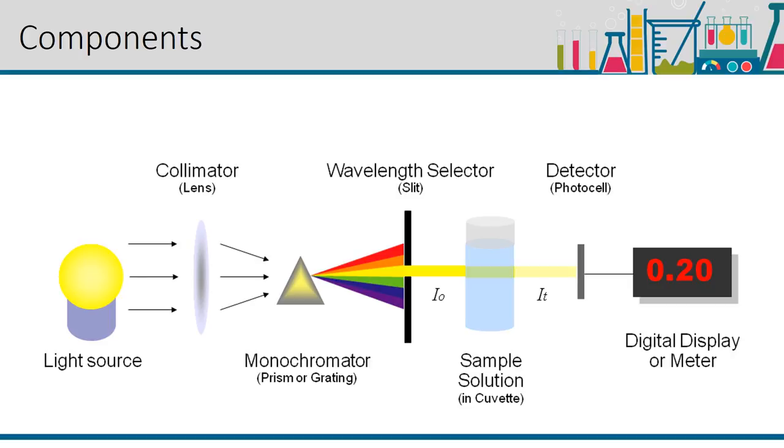If the concentration of the solution is greater, more light will be absorbed, which can be identified by measuring the difference between the amount of light at its origin and that after passing the solution.